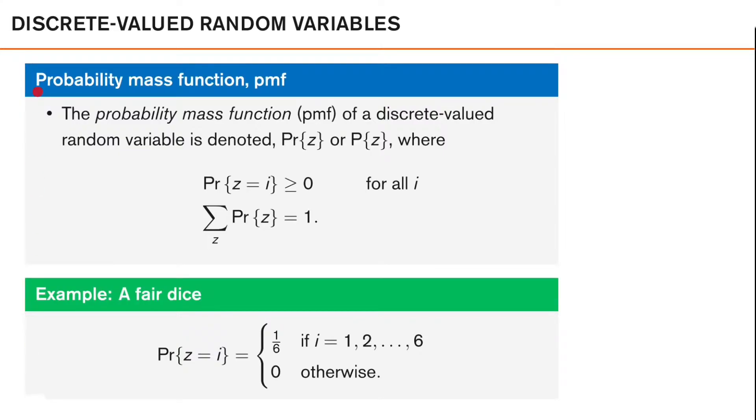Let's start by looking at discrete-valued random variables for which we describe their properties using a probability mass function, or PMF for short. Now, the probability mass function of a discrete-valued random variable is in this course denoted as Pr{z} or just P{z}, but we will mostly be using this notation in this course. Note also that we are using braces here to indicate that z is a discrete-valued random variable.